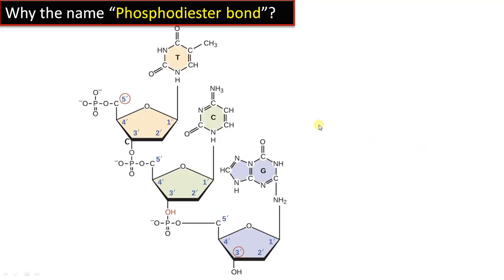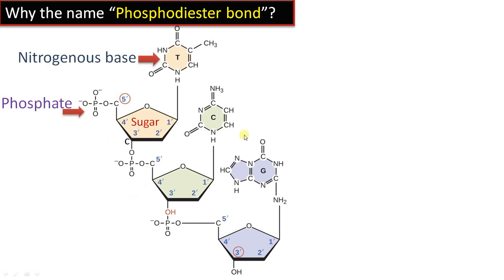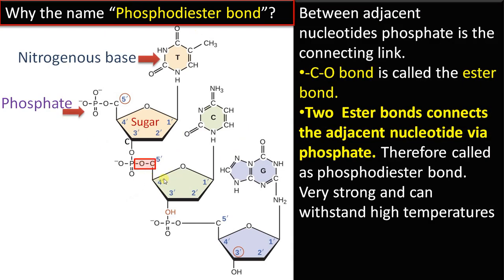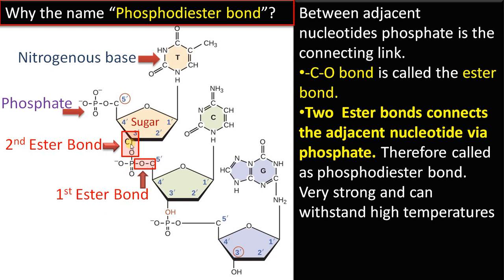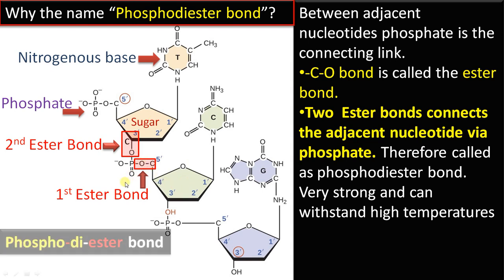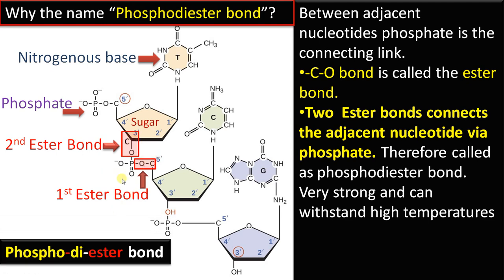Now, why the name phosphodiester bond? In the second nucleotide at the fifth position, this is the first ester bond (C-O bond), and this is the second ester bond from the third carbon position towards the phosphate group. So we have two ester bonds connecting adjacent nucleotides through phosphate — two ester bonds connect adjacent nucleotides via phosphate. That is why this is called a phosphodiester bond.